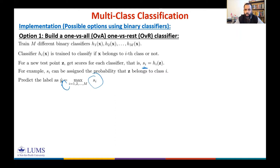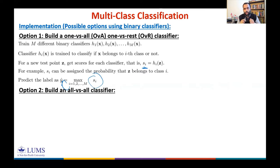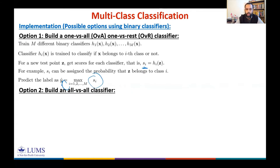Another commonly used option is the all-versus-all (AVA) classifier. You use a binary classifier to compare every pair of classes — for example, whether a test point belongs to class 1 or 2, class 1 or 3, class 2 or 3, and so on. In AVA, we need M-choose-2 different binary classifiers, since we compare every pair of classes.